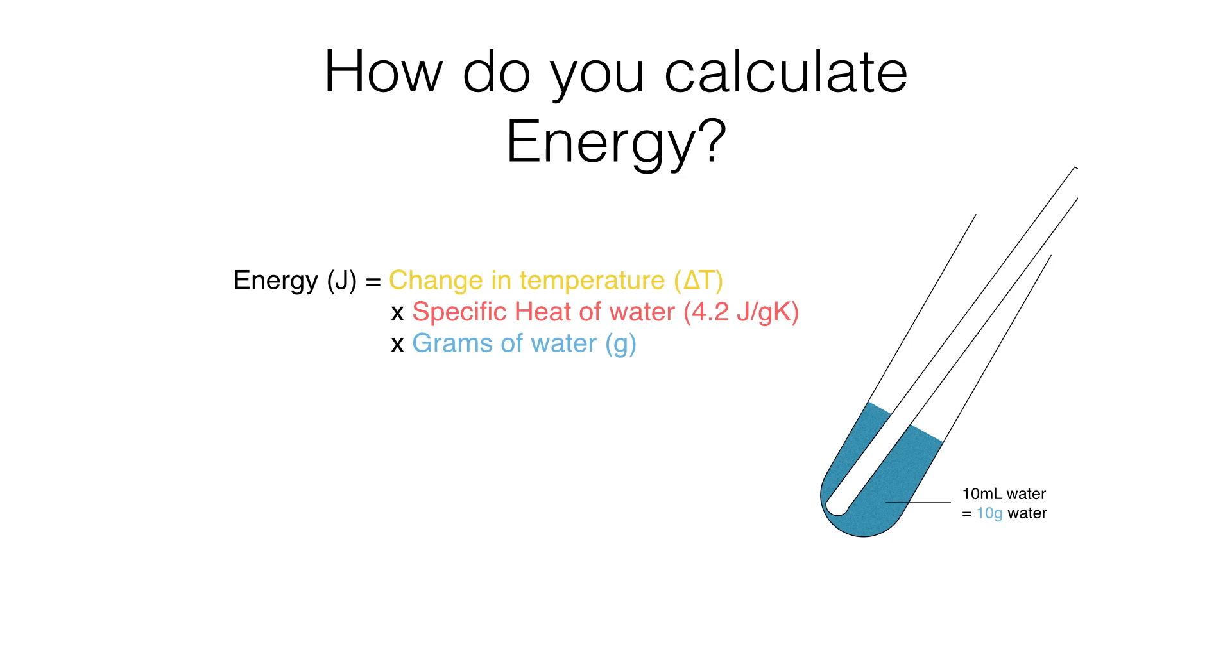If I substitute all the numbers from the table and the 10 mils of water, if my temperature rise was about 54 degrees, that's 54 degrees Kelvin (the capital K sign). Multiplying by the specific heat of water, 4.2 joules per gram per Kelvin, and by the 10 grams, we get 1680 joules of energy.